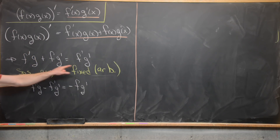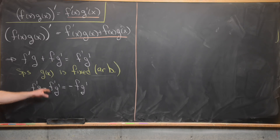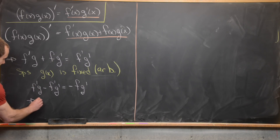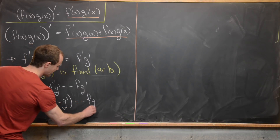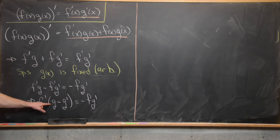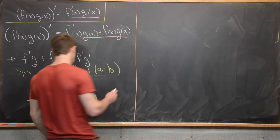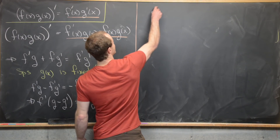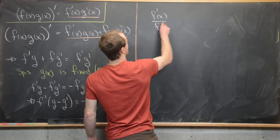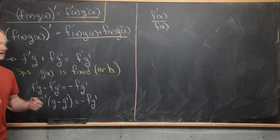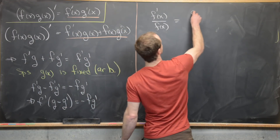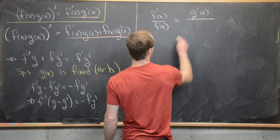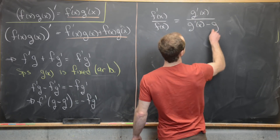I've moved terms to each side. Now notice I can factor an f' out of the left-hand side, giving f'(g − g') = −fg'. Now I can move everything having to do with g to the right-hand side and everything having to do with f to the left-hand side. Putting the dependence on x back in, that gives us f'(x)/f(x) = g'(x) / (g'(x) − g(x)).